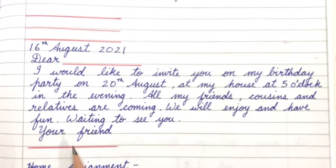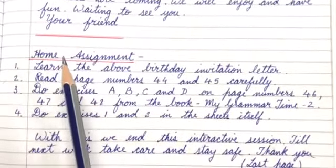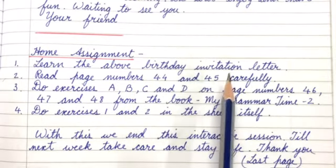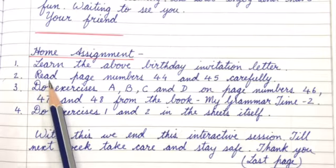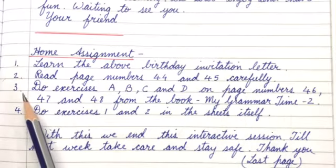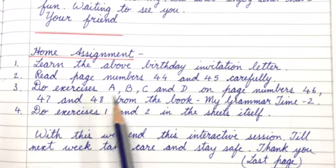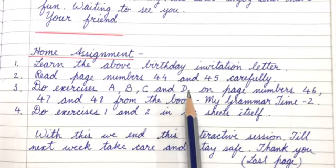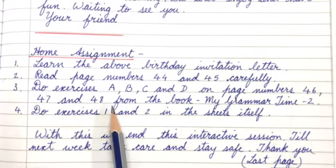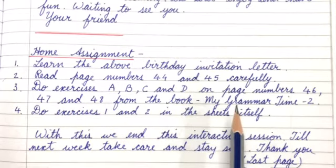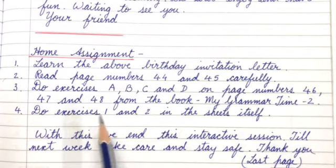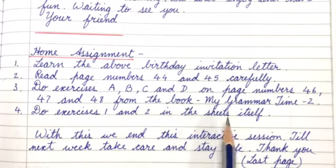Here, children, you will write your own name. Home assignment: Number 1, learn the above birthday invitation letter. Number 2, read page numbers 44 and 45 carefully. Number 3, do exercises A, B, C and D on page numbers 46, 47 and 48 from the book My Grammar Time 2. Number 4, do exercises 1 and 2 in the sheets itself.